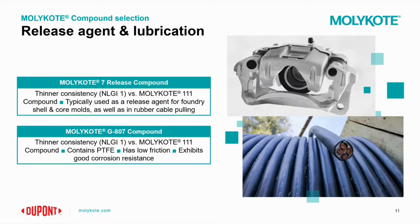As release agent and lubricating compounds, we have the Molykote 7 Release and G807 compound. Both are thinner in consistency than the sealing compounds like the 111. The Molykote 7 is typically used for foundry shells and core molds as a release agent, and commonly used for cable pulling. The G807 contains PTFE, has very low friction, and exhibits good corrosion resistance — commonly used on brake caliper pins due to exposure to water splashing and the need to maintain good lubricity.